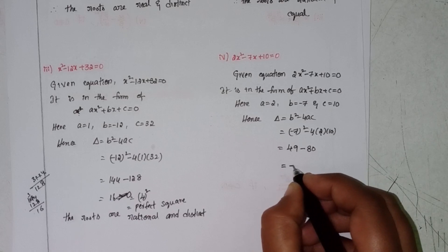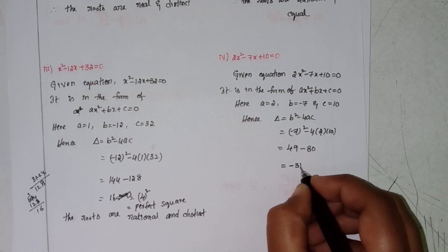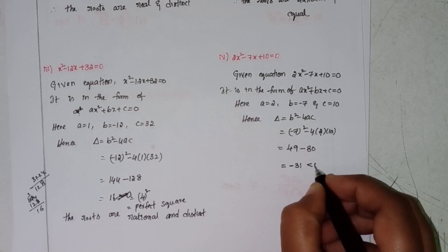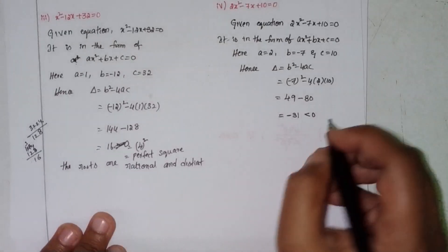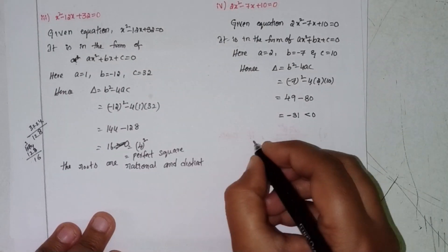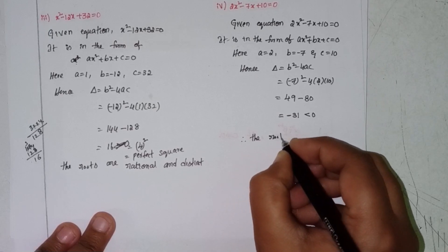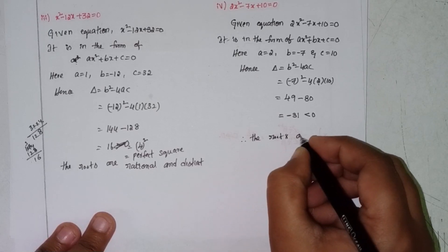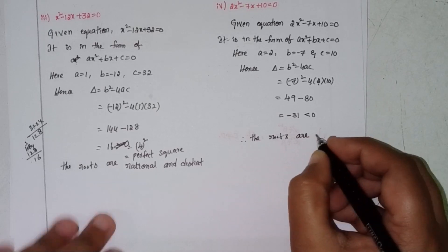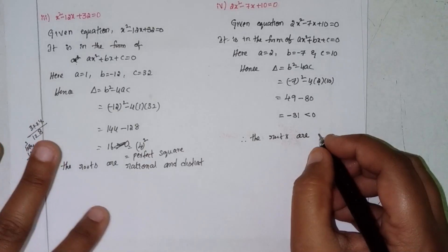Delta = 49 - 80 = -31, which is less than 0. Therefore, the roots are no real roots (imaginary roots).